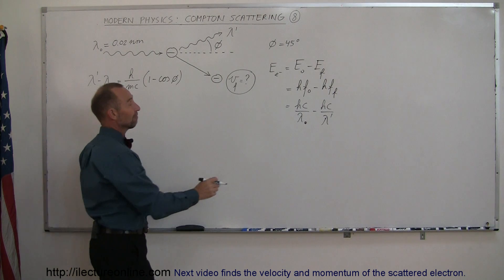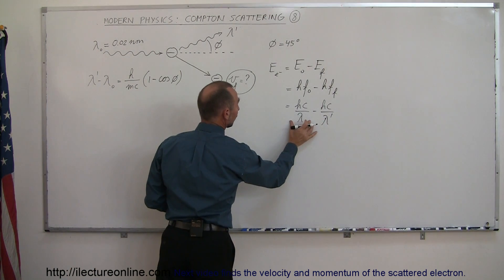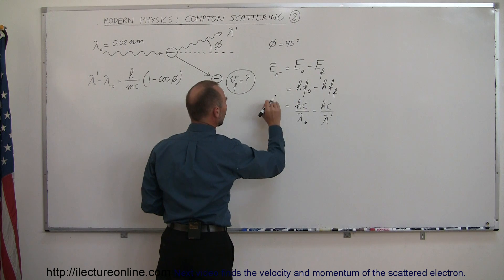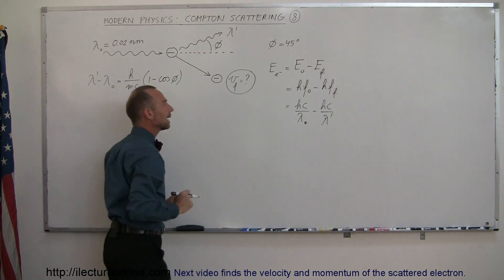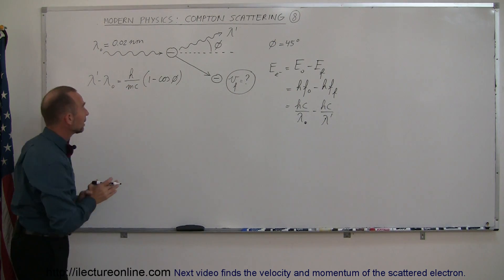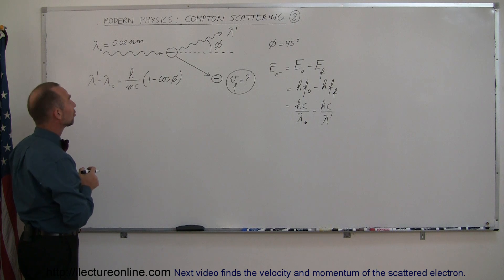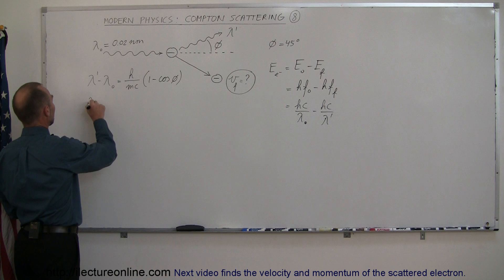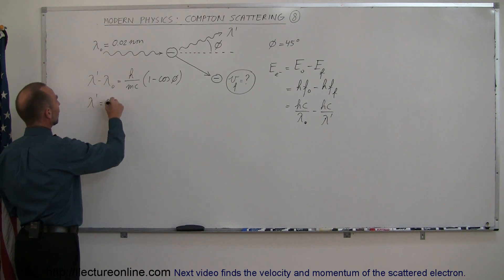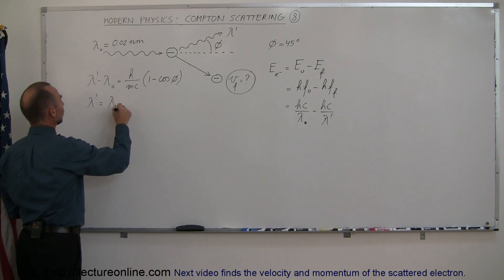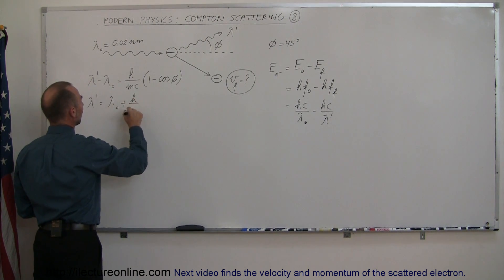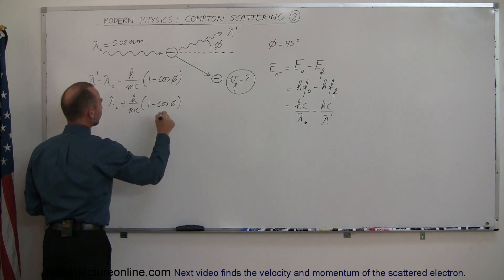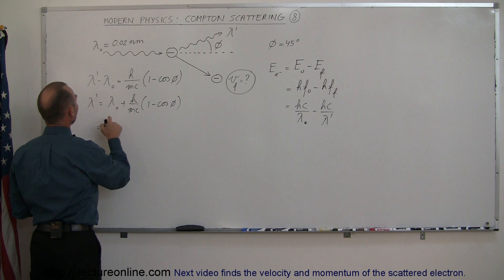All we have to do is find the final wavelength, plug in the initial wavelength, and that will give us the difference in energies — which is the energy given to the electron. So the strategy is to solve for lambda prime. Lambda prime equals lambda initial plus h over mc times 1 minus the cosine of phi.